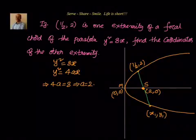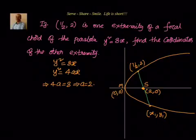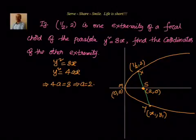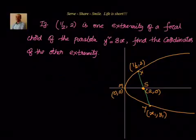We have to find that point. Our approach will be: first, we know that this point also satisfies the equation y² = 8x, so y1² = 8x1. Another thing we know is the slope of this line will be the same throughout. So slope of XS equals slope of SY, and we also know y1² = 8x1. These are the two equations we will leverage to find the solution.